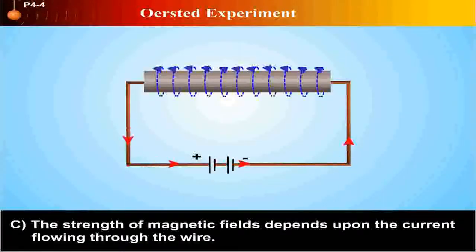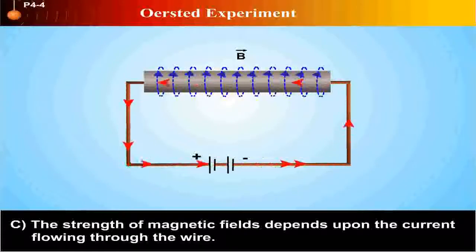C. The strength of magnetic fields depends upon the current flowing through the wire.